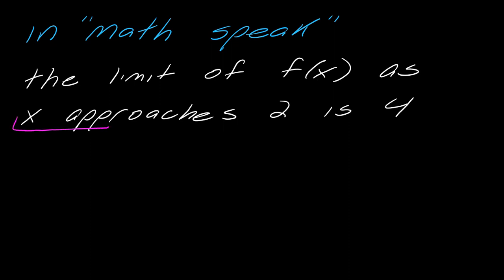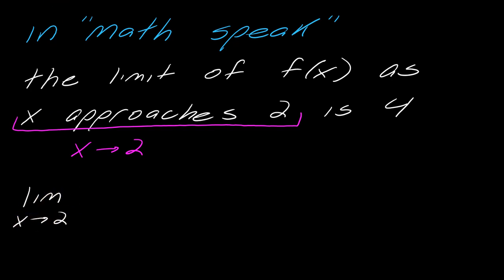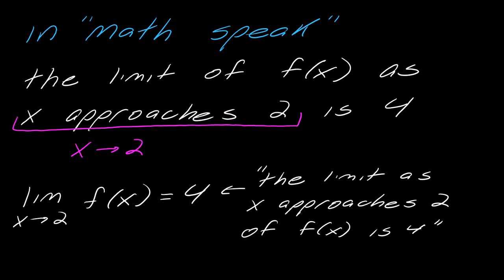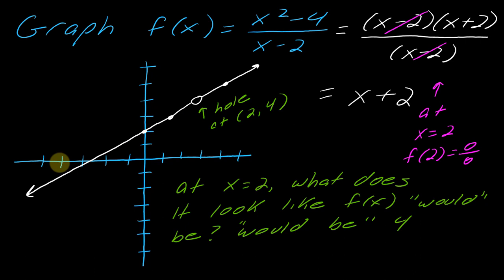I also want to show you some shorthand. The idea of x approaches 2 — we actually use an arrow to indicate that. To state the whole phrase, the limit as x approaches 2 of f of x equals 4 is written mathematically as: limit as x approaches 2 of f of x equals 4. The limit as x approaches 2 means I want to get close to x equals 2 and ask where does this graph look like it's going. I know there's a hole there, and that's okay — it means the function value does not exist, but the limit is this idea that if it did, we can see where it's going.